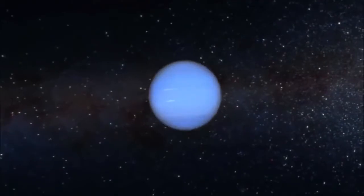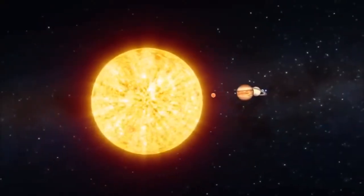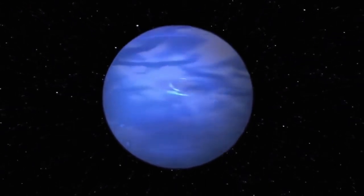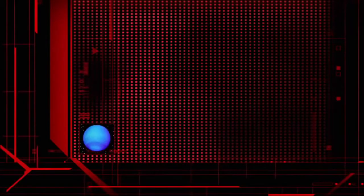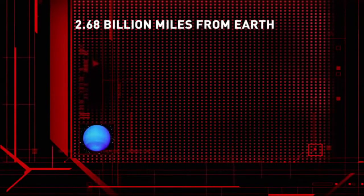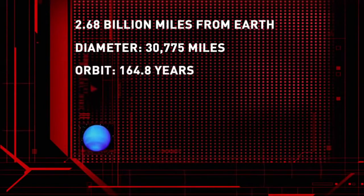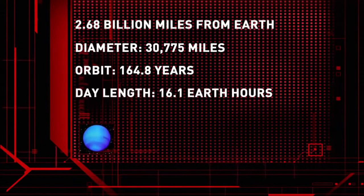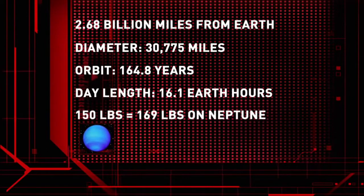Uranus shares the outer solar system with its sister planet Neptune, a gleaming sapphire some three billion miles away from the sun. With the demotion of Pluto, Neptune is now our outermost planet. Neptune takes its name from the Roman god of the seas. Neptune is 2.68 billion miles from Earth. Measuring roughly 30,000 miles, Neptune's diameter is four times that of Earth's. A year on Neptune is equivalent to 165 Earth years, and a day lasts 16.1 hours. If you weigh 150 pounds on Earth, you would tilt the scales at 169 pounds on Neptune.